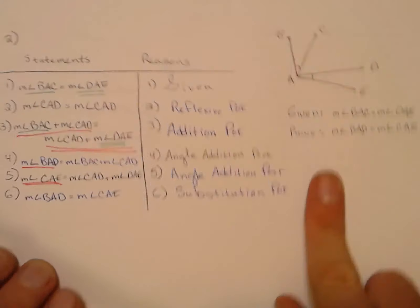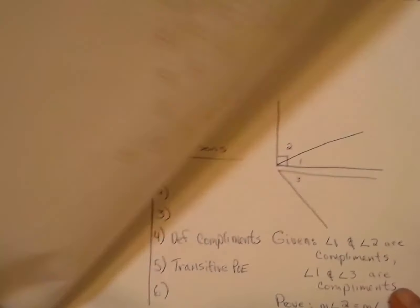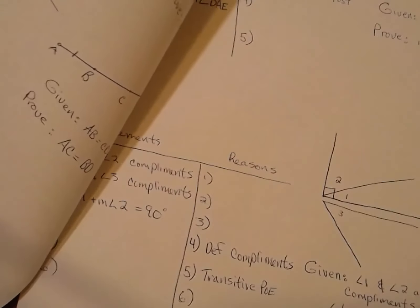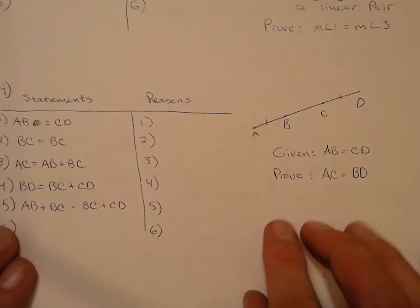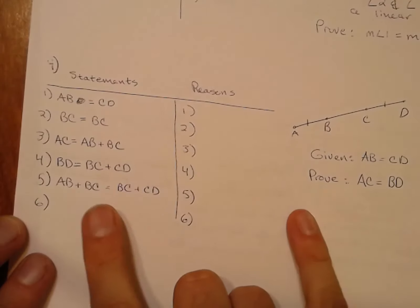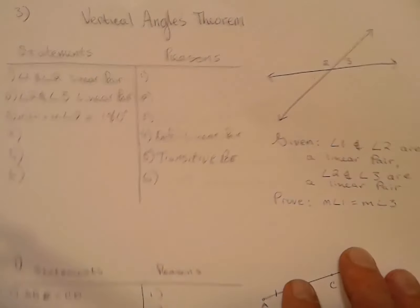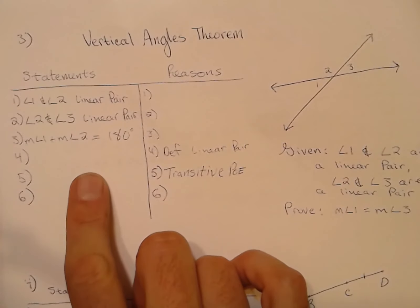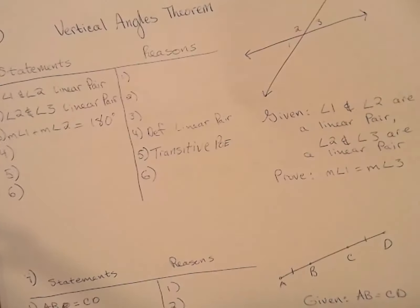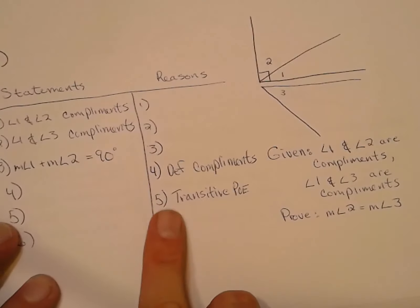There's another problem very similar to this one, only with segments — that's number four. Number four is very similar to number two with segments instead of angles. Two-column proof number three is also very similar to two-column proof number six.